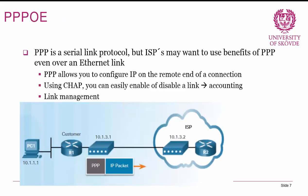Now let's look at PPP over Ethernet. PPP is a serial protocol, and ISPs may want to use its benefits even over Ethernet links. PPP allows you to configure IP on the remote end of a connection, which is convenient for ISPs whose customers can't do that configuration themselves. Using CHAP, you can easily enable or disable a link — useful for accounting, since you can remove a customer's username when they don't pay. PPP also offers link management, which is valuable from an ISP perspective.